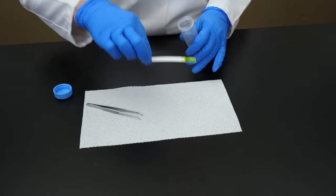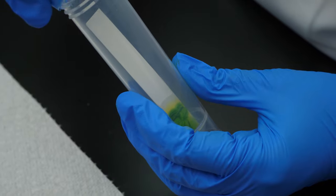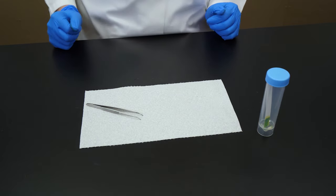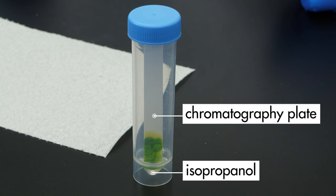After four minutes, we place the chromatography plate in a vial containing a small amount of an organic solvent called isopropanol. The plate will act like a wick to draw the solvent to the top of the plate.